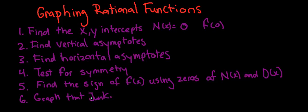I'm going to graph another rational function, and I have here the six-step program to getting the graph of a rational function. Let's just go over that quickly again. First we find the x-y intercepts, find the vertical asymptotes, find the horizontal asymptotes if any, test for symmetry, find the sign when we make our chart, and then we make our graph.